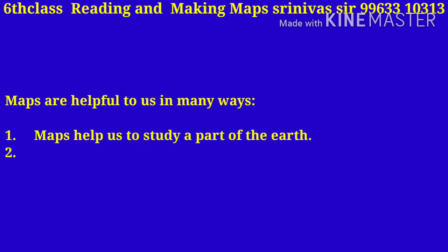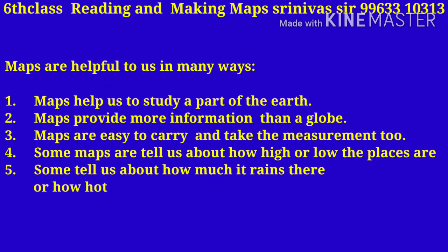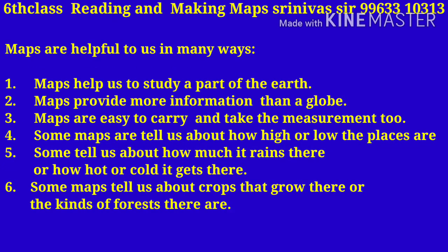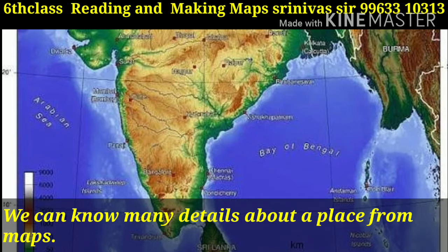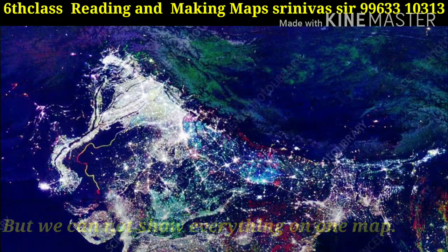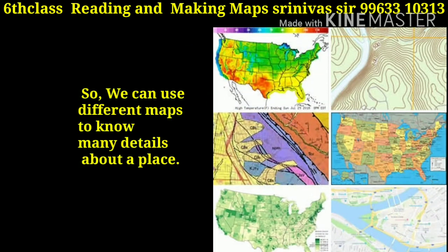Maps are helpful to us in many ways. Maps help us to study a part of the earth. Maps provide more information than a globe and are easy to carry. Some maps tell us about how high or low places are, how much it rains, or how hot or cold it gets. Some maps tell us about crops that grow there or the kinds of forests. We can know many details about a place from maps, but we cannot show everything on one map, so we use different maps to know many details about a place.